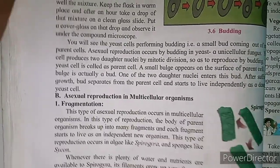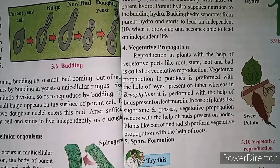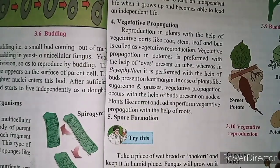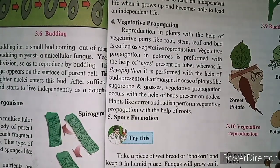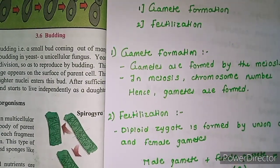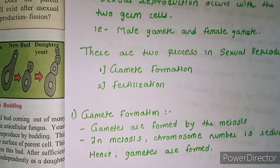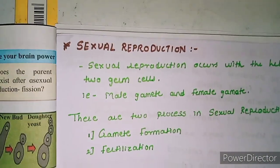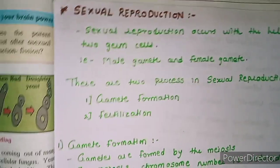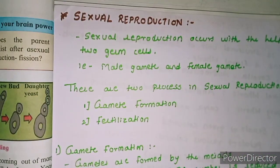The five types of asexual reproduction in multicellular organisms are: fragmentation, regeneration, budding, vegetative propagation, and spore formation. Now the next topic is sexual reproduction. Basically, reproduction is of two types — asexual and sexual reproduction. We have completed asexual reproduction, so we will start sexual reproduction now.